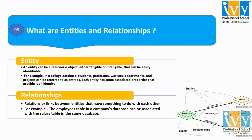Now, coming to the relationship: relations or links between entities that have something to do with each other is known as relationships. In the same diagram, we can see the professor can belong to the mathematics department, the physics department, or the management department — meaning the professor and the respective department have a relationship between each other. We can also consider a company database in which the employees table can be associated with the salary table in the same database.